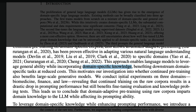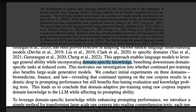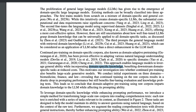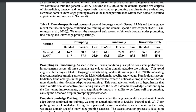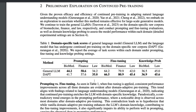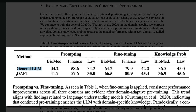While DAPT is beneficial for fine-tuning and knowledge probing, it actually hurts the model's prompting ability — a finding demonstrated in a comparison table. The table looks at a general LLM that has undergone domain adaptive pre-training across three domains: biomedical, finance, and law.